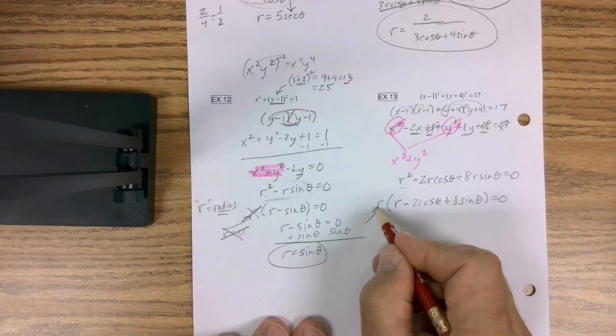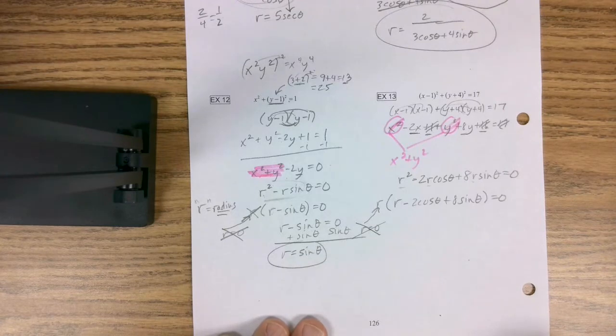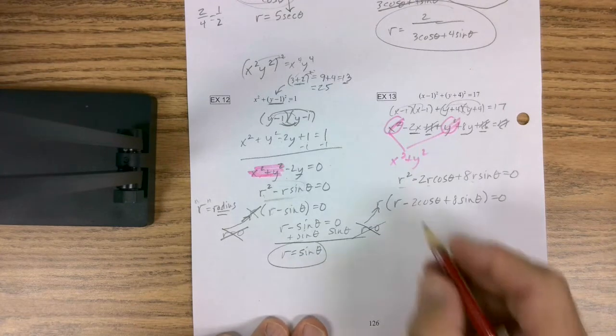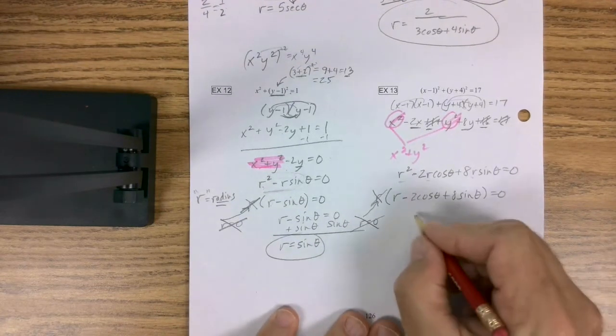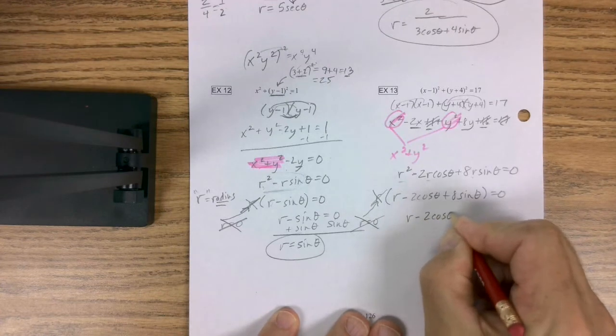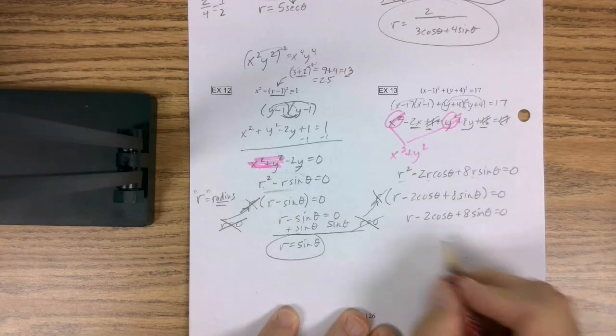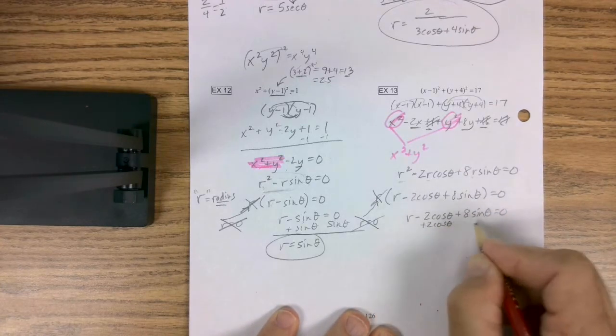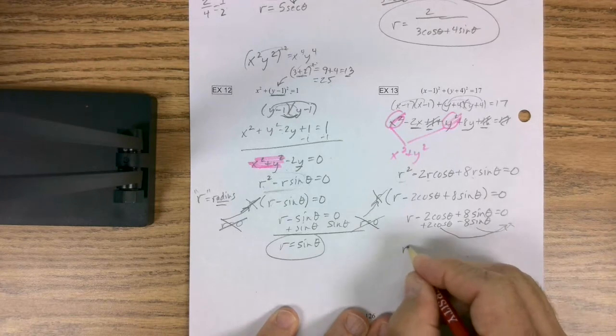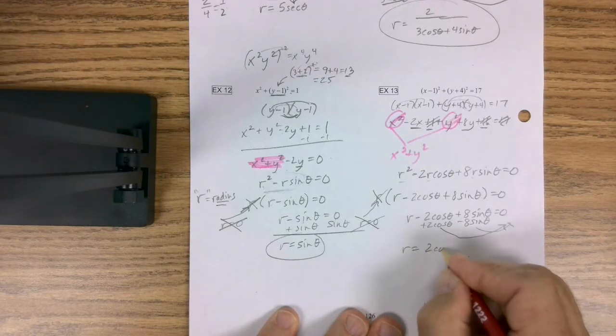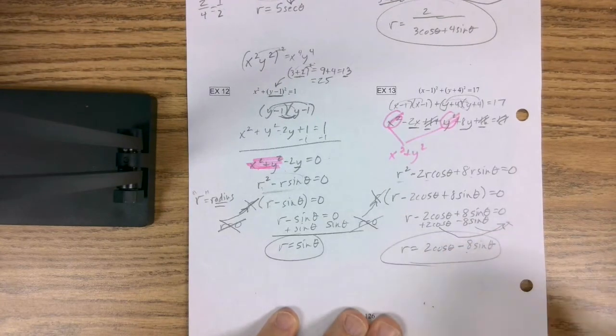Get in the habit of that. So you get r times r minus 2 cosine theta plus 8 sine theta equals zero. Again, if you've got this little lonely r out here, that means r could equal zero, which is a mathematical geometrical impossibility to have a radius of zero. So this thing just remarkably, very uniquely, doesn't happen very often, just disappears. So really I need to concentrate on only this portion of it. And so to solve for r, I'm going to add 2 cosine theta, I'm going to subtract 8 sine theta, and I'm going to do that to this side and that to this side. So I get r is 2 cosine theta minus 8 sine theta. And there it is. Done.